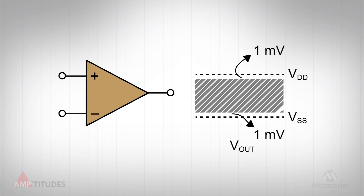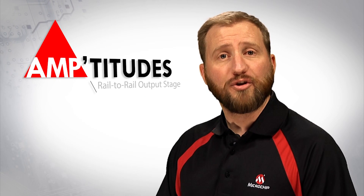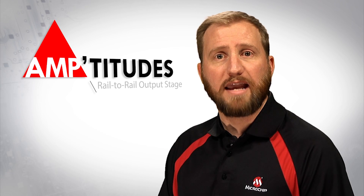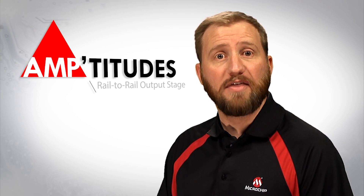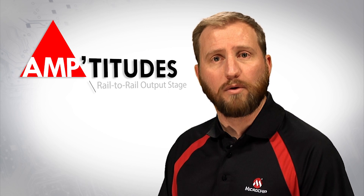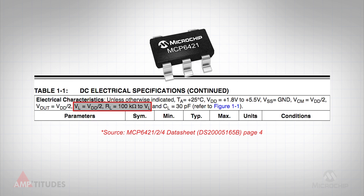The typical specification at 5.5 volts is plus or minus 1 millivolt within the positive and negative supply rail, as illustrated here. I mentioned earlier that the output voltage swing of the amplifier is also dependent on the output loading condition, namely the amount of current that the op amp must source. The specification for VOH and VOL shown for the MCP6421 are specified with a 100 kilo-ohm load resistor to mid-supply. Hence, the amplifier is supplying very little current in this case.